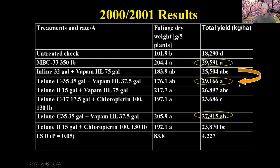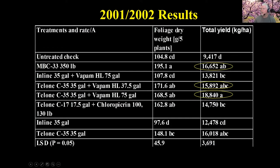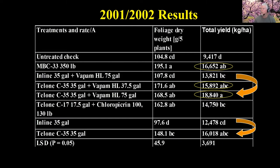We repeated that trial and saw the same results. The 2001–2002 data again shows that yield with methyl bromide compares favorably to Telone C35 plus VAPAM. That telone, chloropicrin, VAPAM combination — especially when VAPAM is at the higher rate — is comparable to, if not better than, methyl bromide in this trial. In no case does the inline drip application work as well as incorporating the fumigant throughout the entire soil bed prior to pulling the bed. Inline is not something that works comparably.